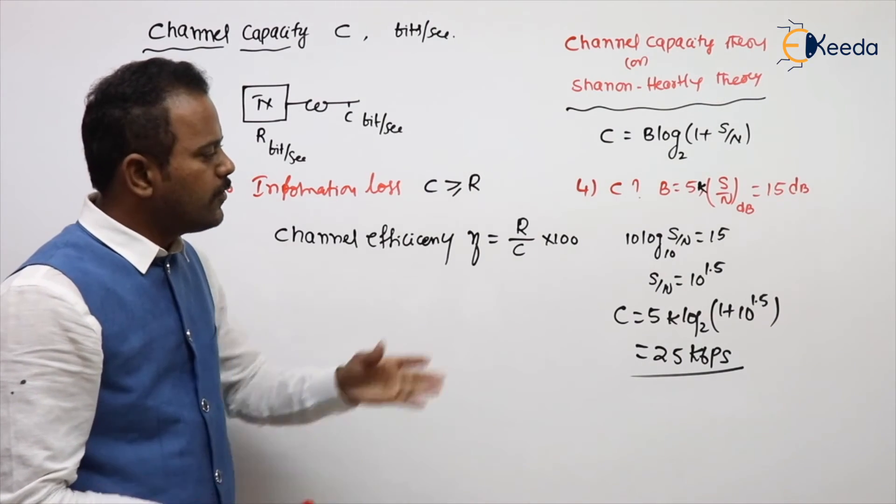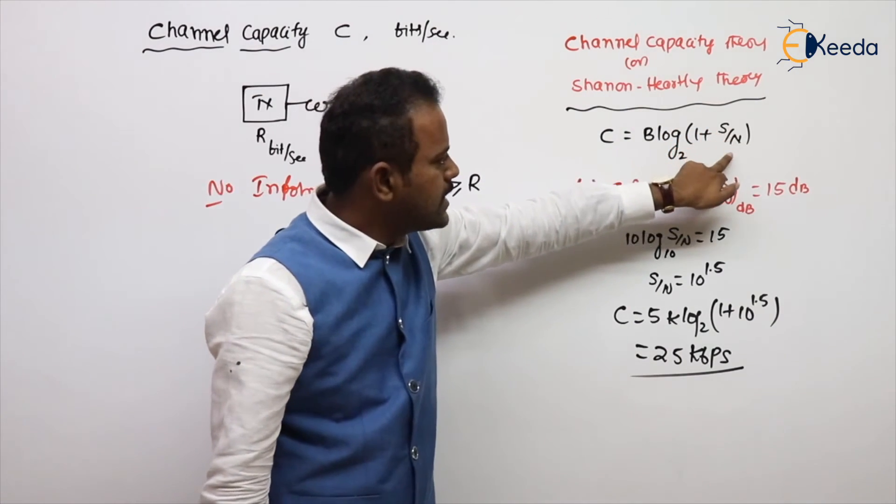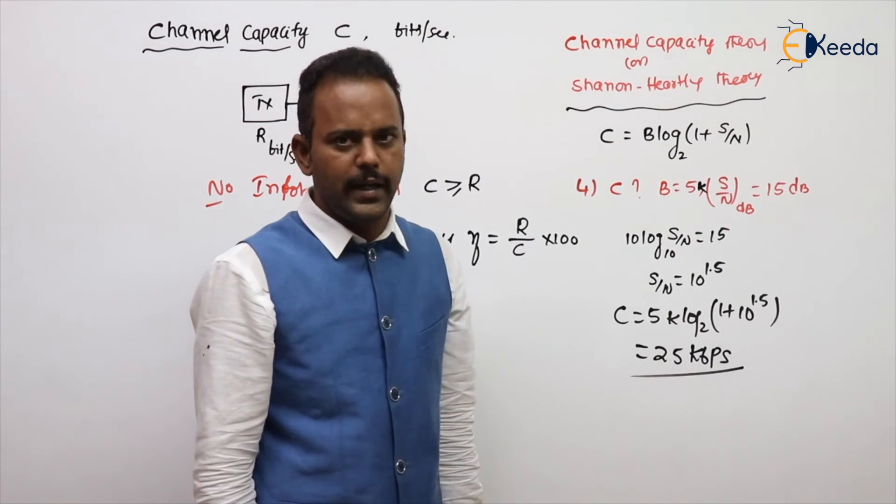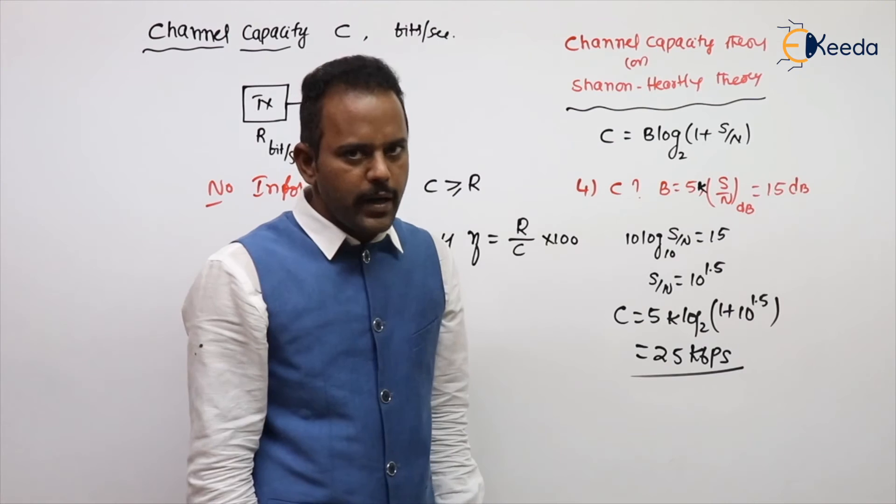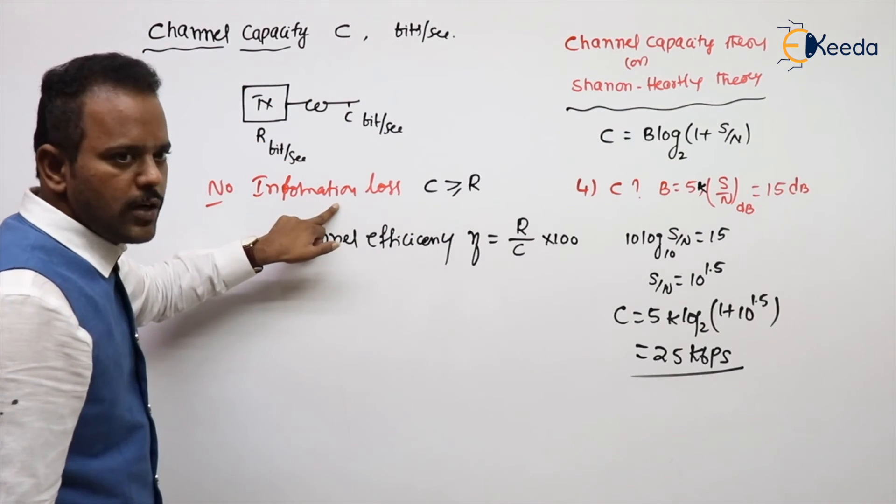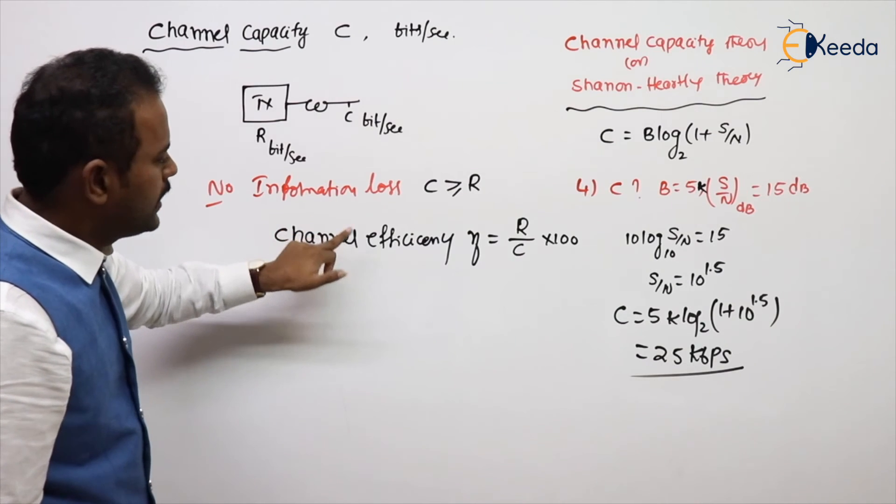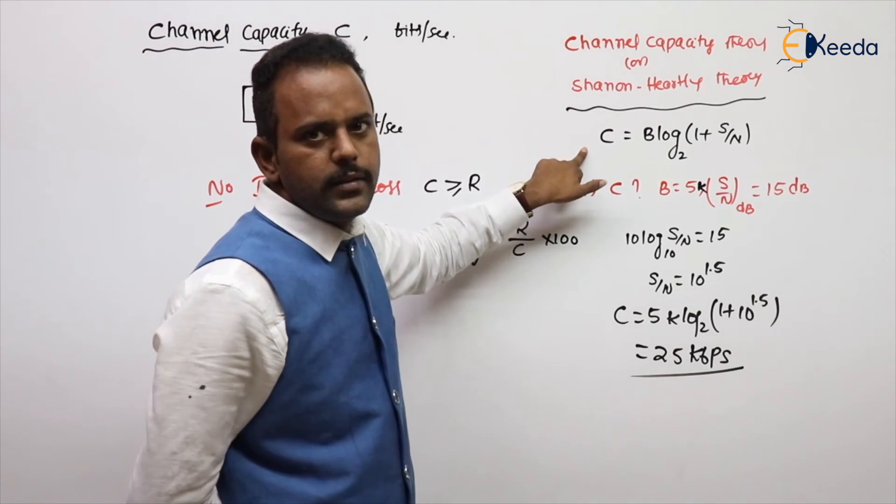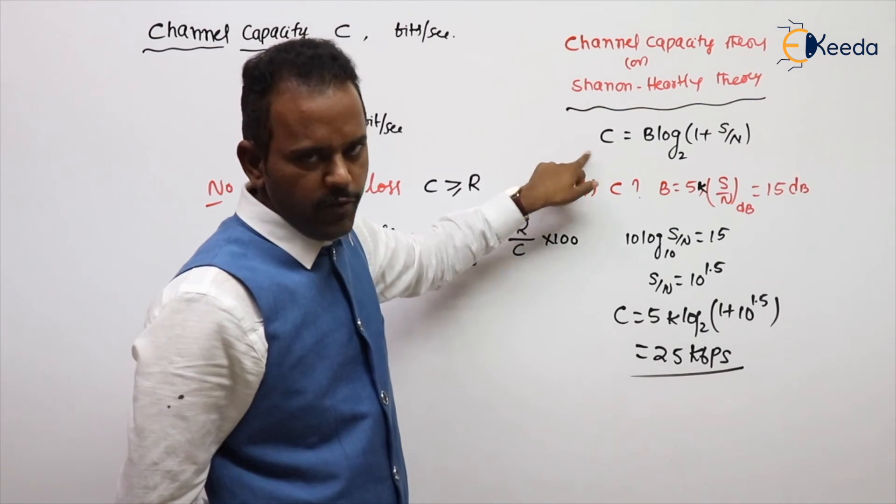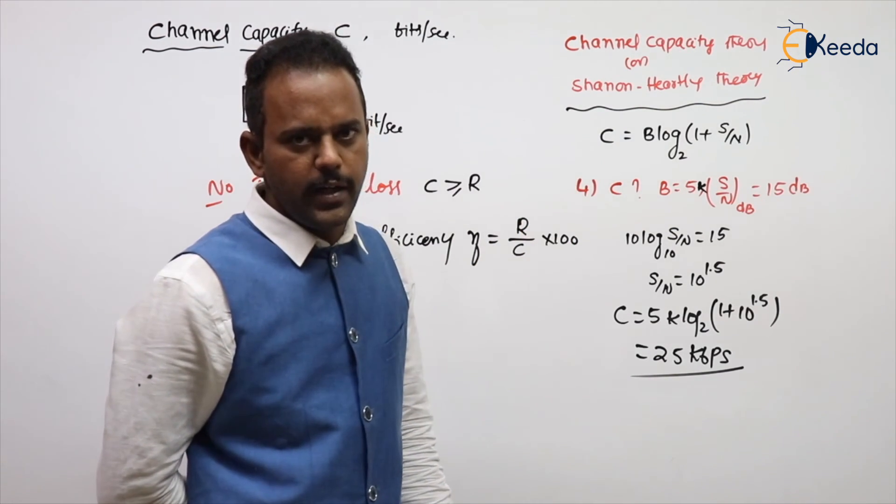That is the way of calculation. The given value is normal, not in decibels. So what you need to remember: what is channel capacity, for no information loss C should be greater than R, channel efficiency and channel capacity theorem. Further details will follow.